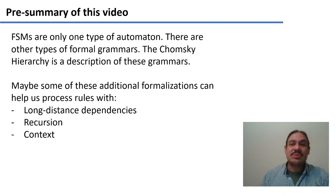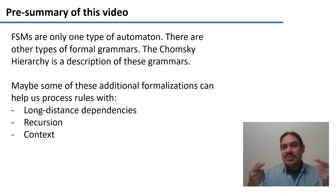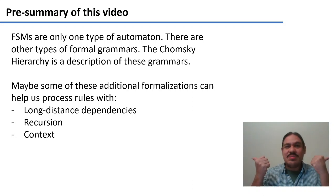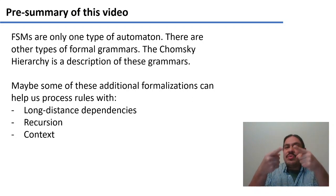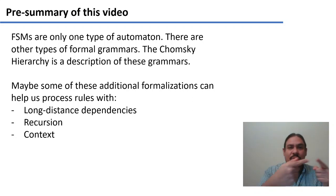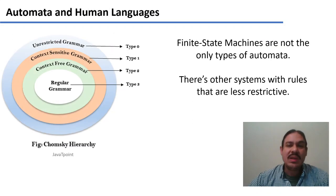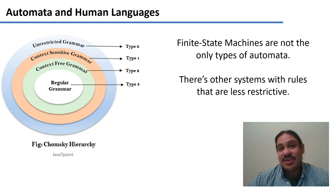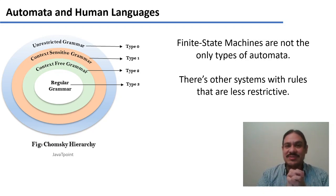Likewise, they could help us with the problem of context, where before you apply a rule, you need to figure out what other symbols are around you, and depending on those, you perform the rule in one way or the other. So again, finite state machines are just one type of automaton, and there are other systems that are less restrictive — and they are here in the Chomsky hierarchy.